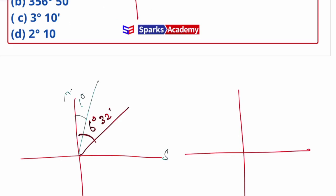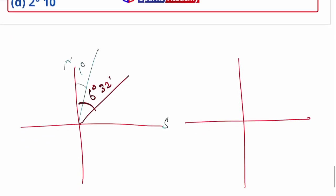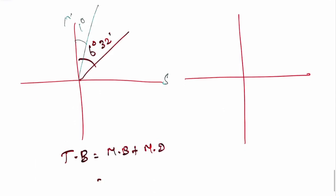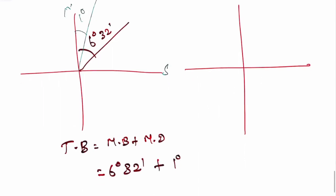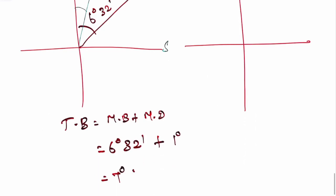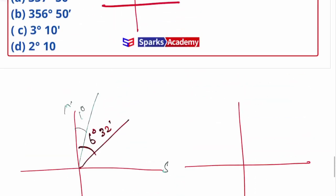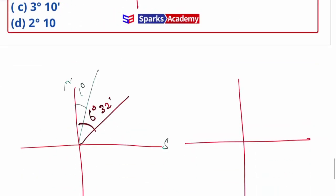To calculate the true bearing: true bearing is equal to magnetic bearing plus magnetic declination for east declination. So 6 degrees 32 minutes plus 1 degree equals 7 degrees 32 minutes true bearing. This true bearing doesn't change.